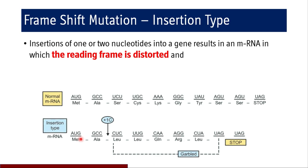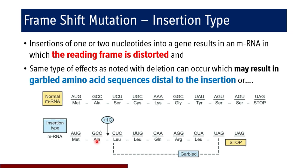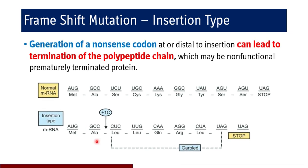In a frameshift mutation of insertion type, insertion of one or two nucleotides into a gene produces an mRNA in which the reading frame is distorted. Distal to the point of mutation, the entire reading frame is altered, resulting in garbled amino acid sequences. The insertion may generate a nonsense codon at or distal to the insertion site, leading to premature termination and a non-functional polypeptide chain.